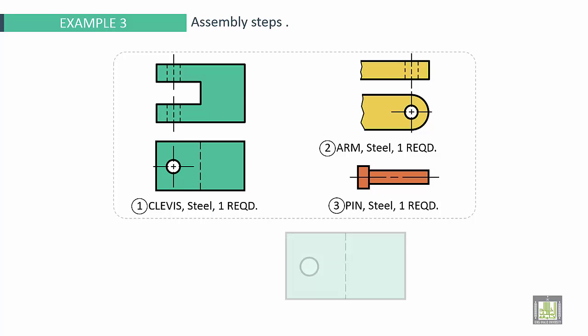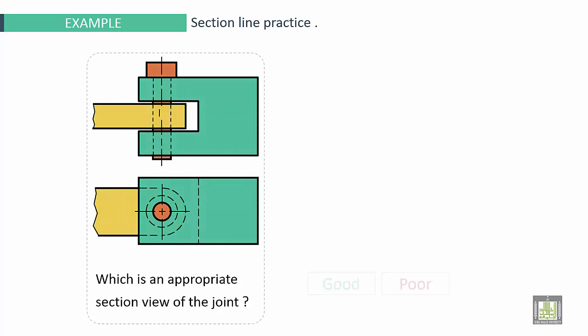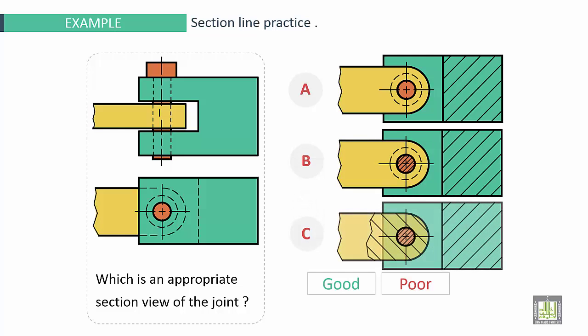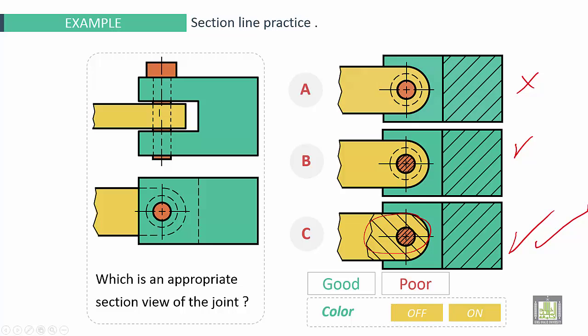Here we have another example for assembly steps. To make assembly of these three parts. We will start by part one and two, and finally make assembly for the third part. Here we have three possibilities. Which is better? Let's check. A it is poor. B, it is good. So the pin it is a standard part but here we have section, a cross section, not longitudinal section. So B it is good. And C it is good also but it is better to show details here. If we make off colors, it is better here.